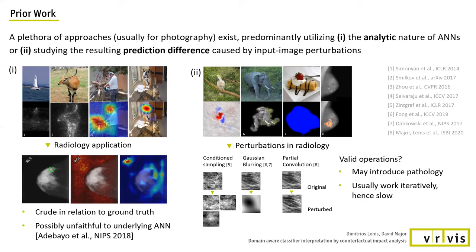Direct approaches typically yield coarse and imprecise results, demonstrated here for mammography on the bottom left, and recent work shows they are at times misleading. Reference-based approaches usually utilize heuristic methodology for information marginalization, which might introduce undecided evidence for pathology or other biasing artifacts. As an example, we demonstrate two established methods: neighborhood condition sampling and the very popular Gaussian blurring for mammography tissue.